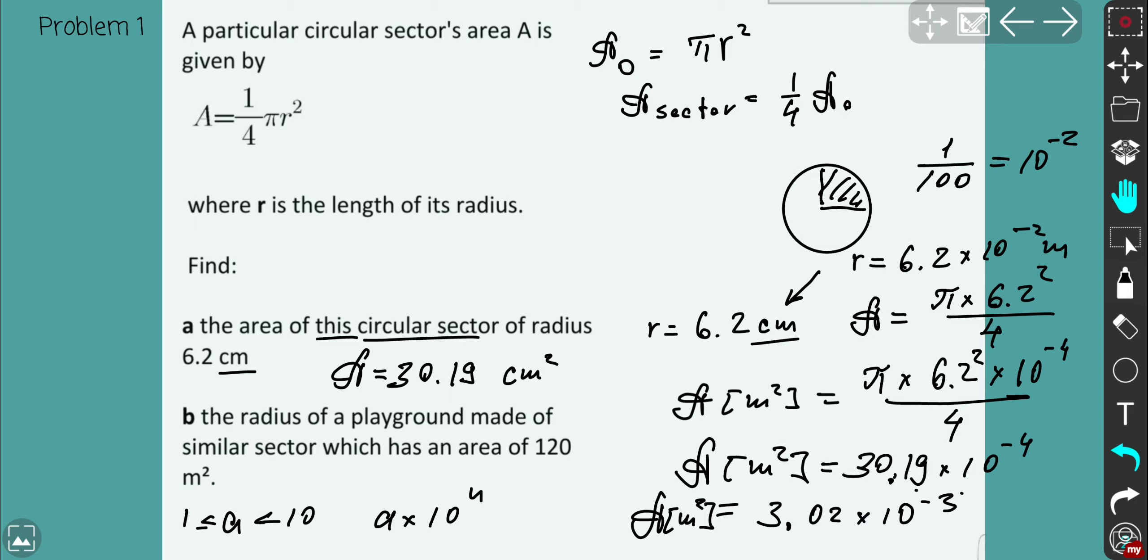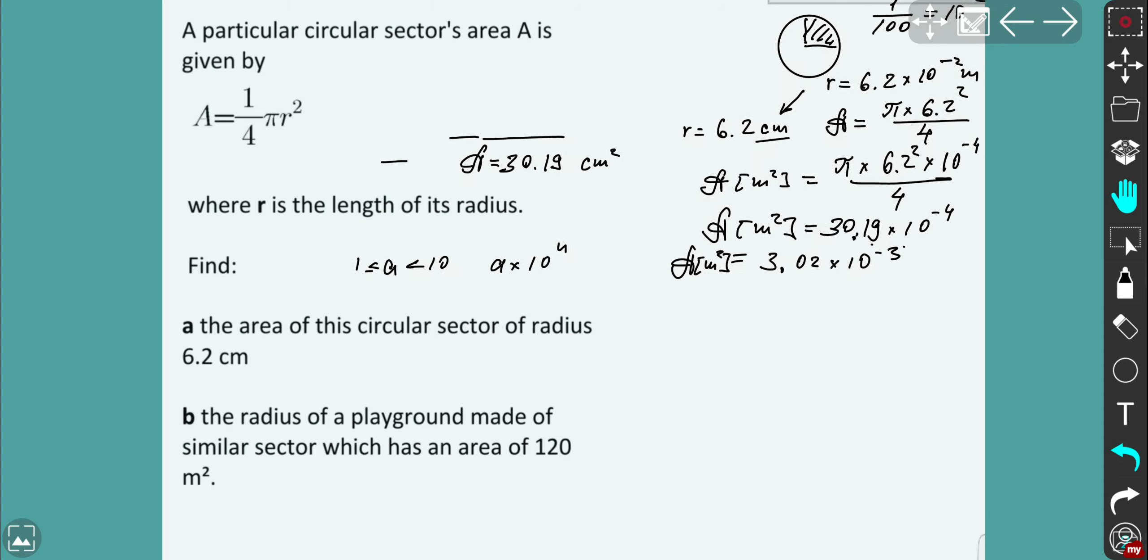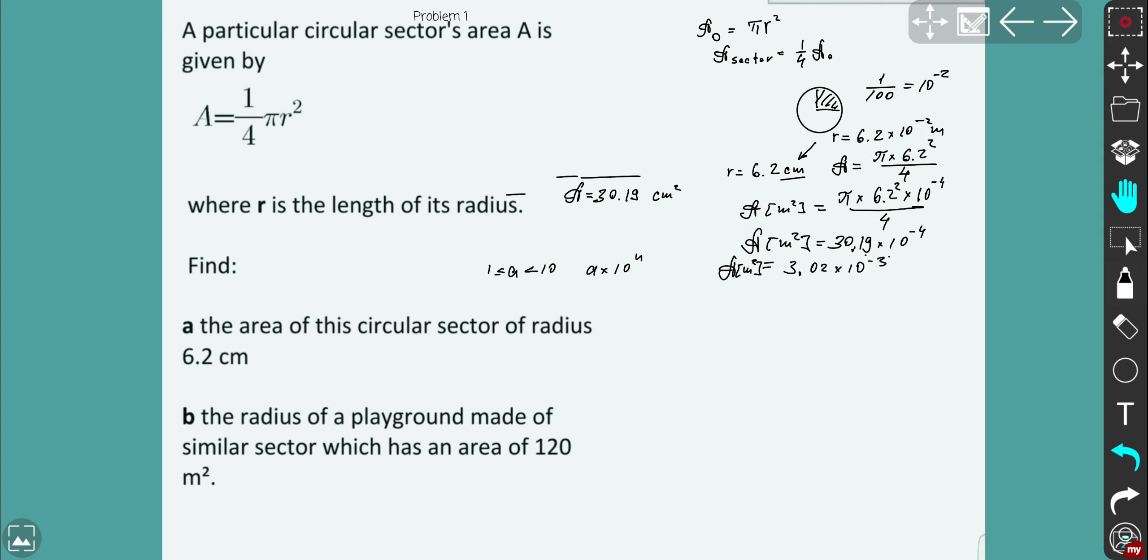By the way, now what I'm going to do, I'm going to accomplish part B. So I diminish that and just move backwards. So I don't need that right now. So that I have part 2. Part B. The radius of playground made of similar sector. It means it has the quarter of the circle, which has an area 120 meters squared. All right. Now we have area in meters squared. And obviously you need to find radius in meters. If you're given area in meters squared, obviously it's easier if you not mention which units to use. So obviously it's easier to find radius in meters.